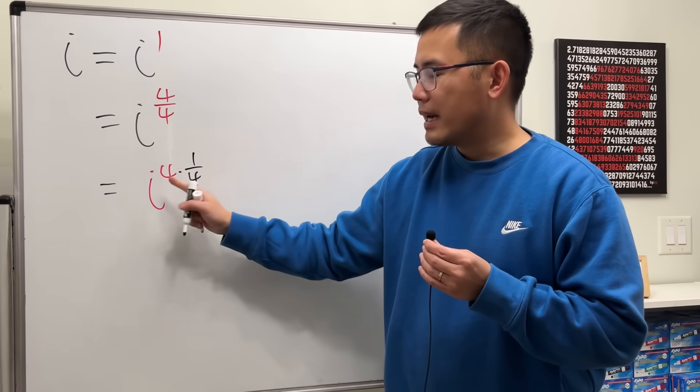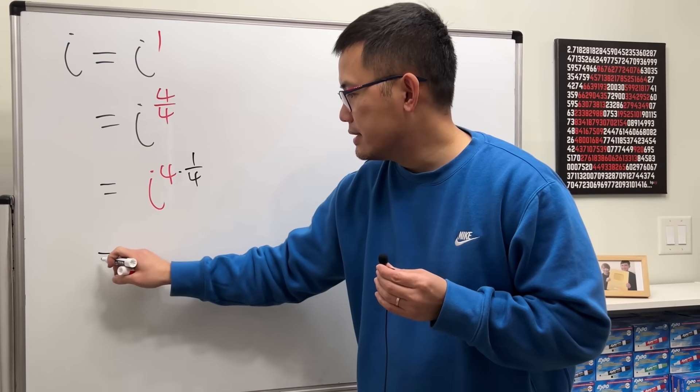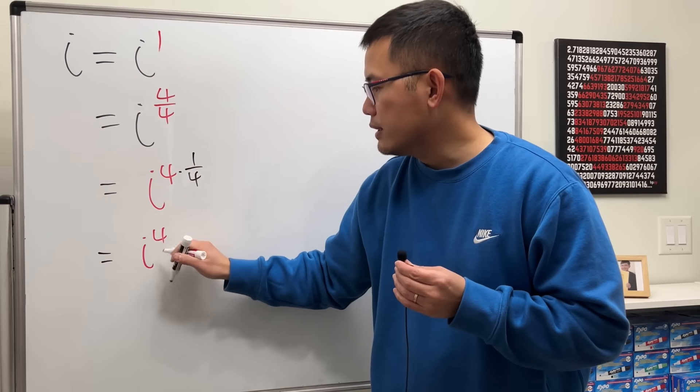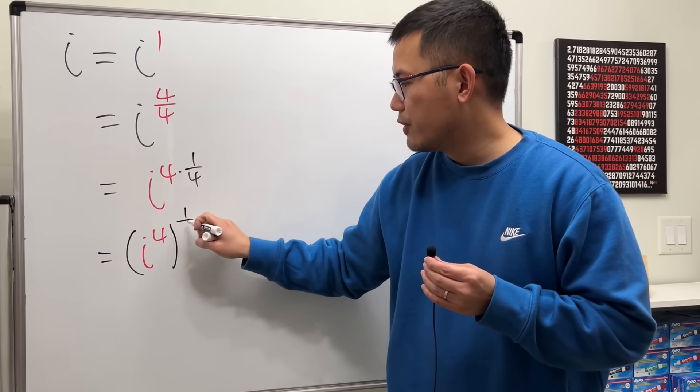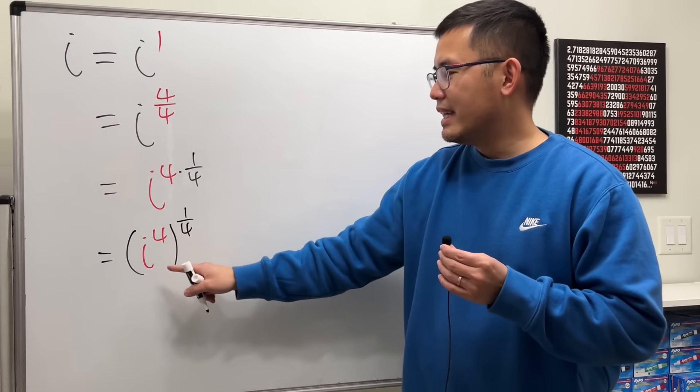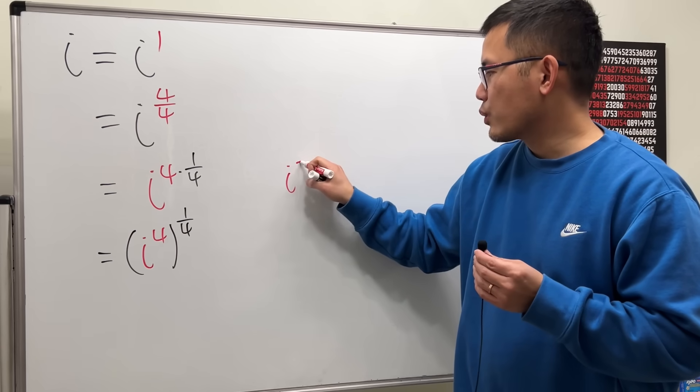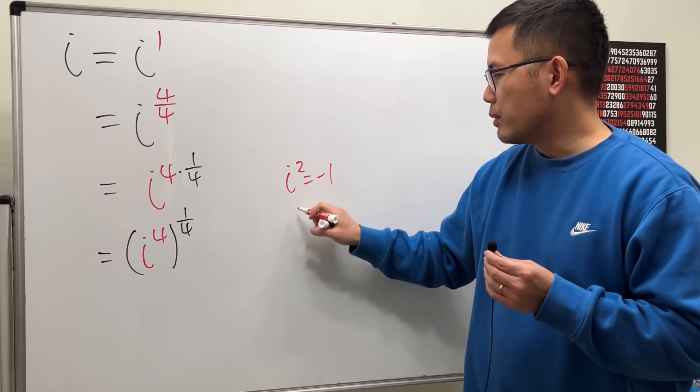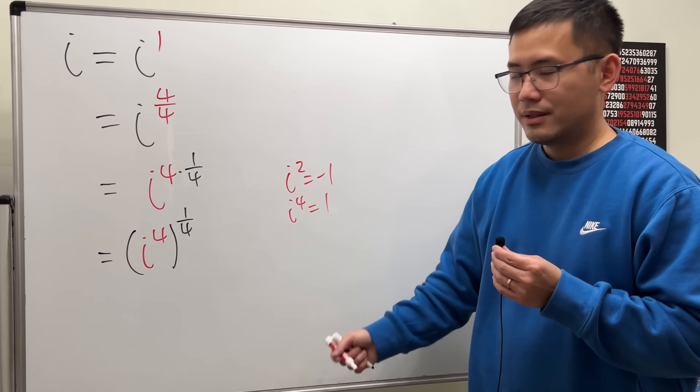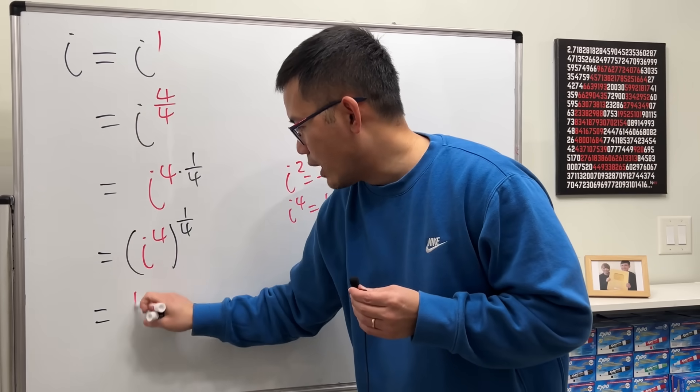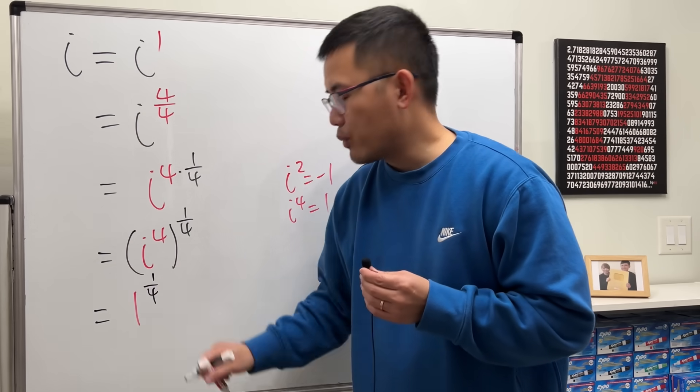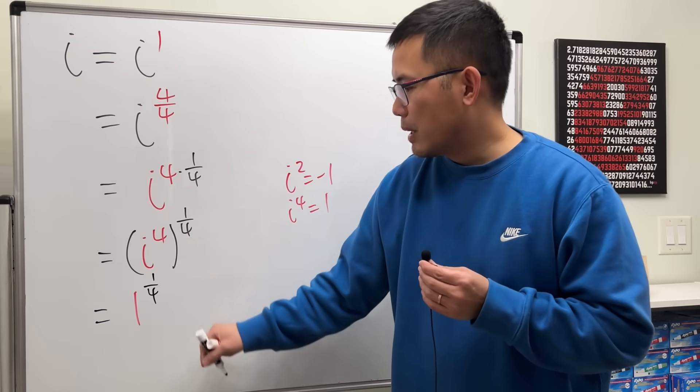And then by the rule of exponents we can write this down as i to the fourth raised to the one over four, yeah. And then i to the fourth power is just equal to one, because again, i squared is equal to negative one. Square both sides, i to the fourth power is one, so this right here we have one to the one over fourth power. One to any power is just equal to one.